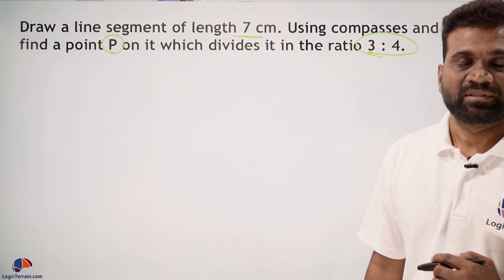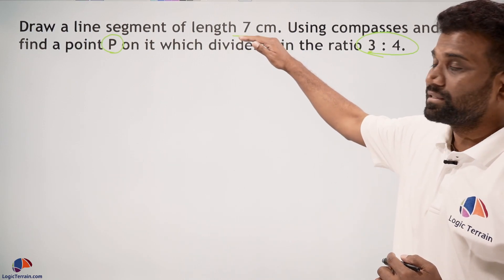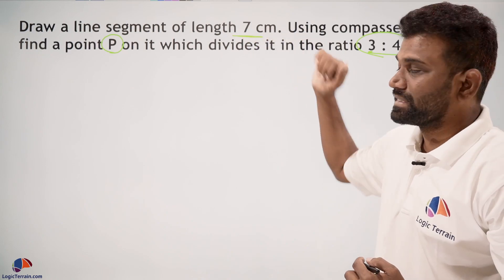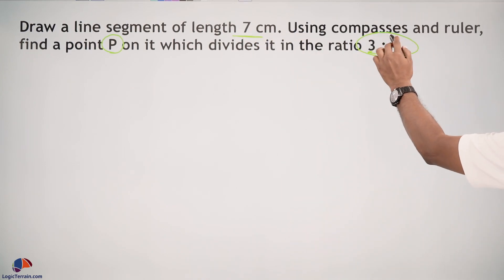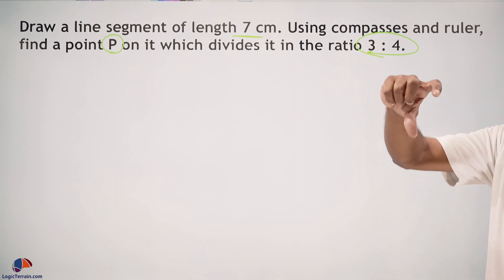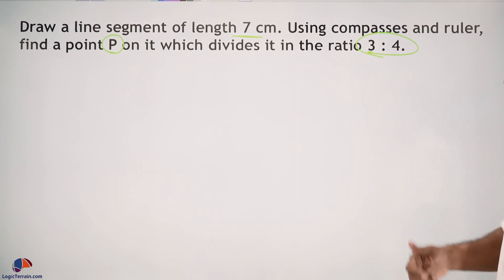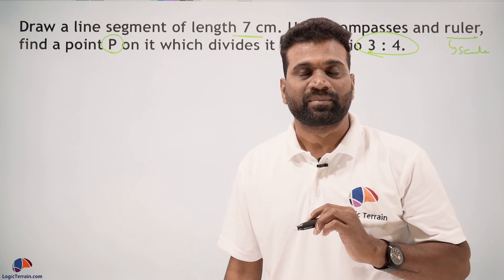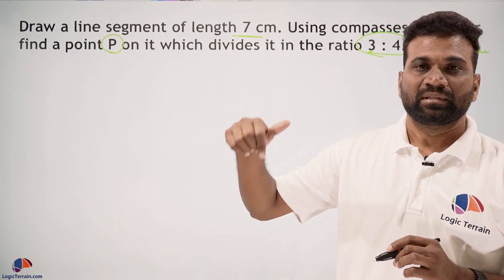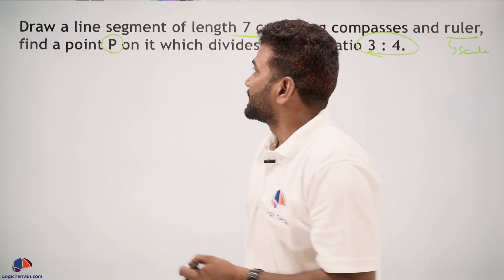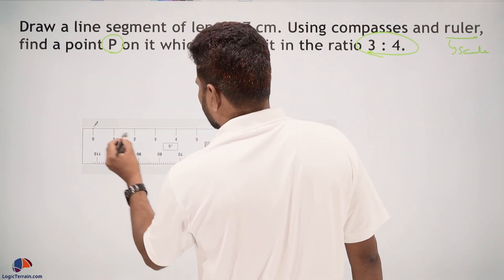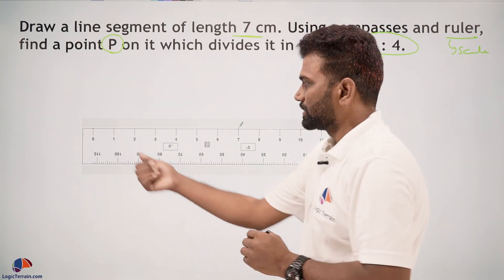Compasses means rounder in regular words, and ruler means scale. Please remember these words: compasses means rounder and ruler means scale. Now I'll take the ruler 0 to 7. With the help of the ruler...